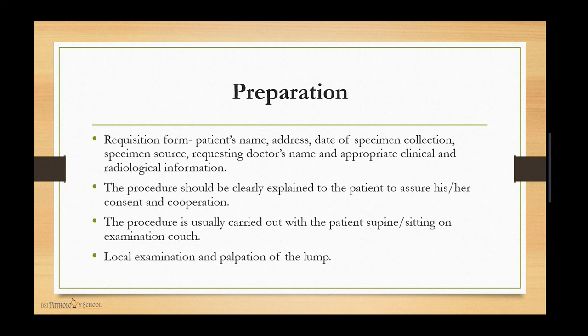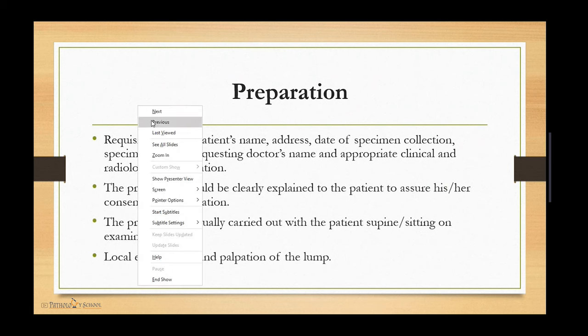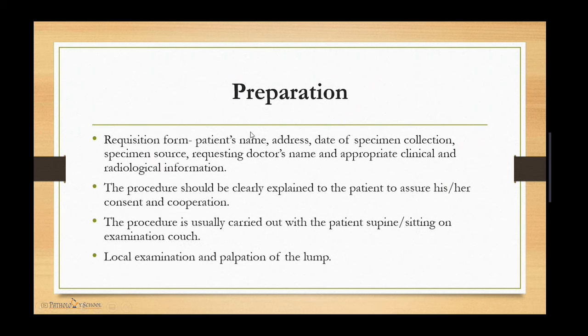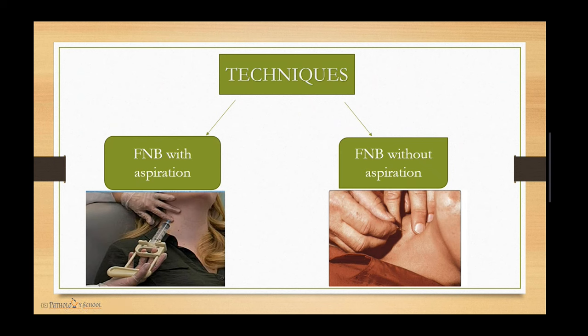Before performing FNAC, a cytology requisition form is needed containing the patient's name, address, date, specimen collection details, specimen source, requesting doctor's name, and appropriate clinical and radiological information. The procedure should be clearly explained to the patient to ensure cooperation. The procedure is usually carried out with the patient in a supine or sitting position, and local examination and palpation of the lump is essential.